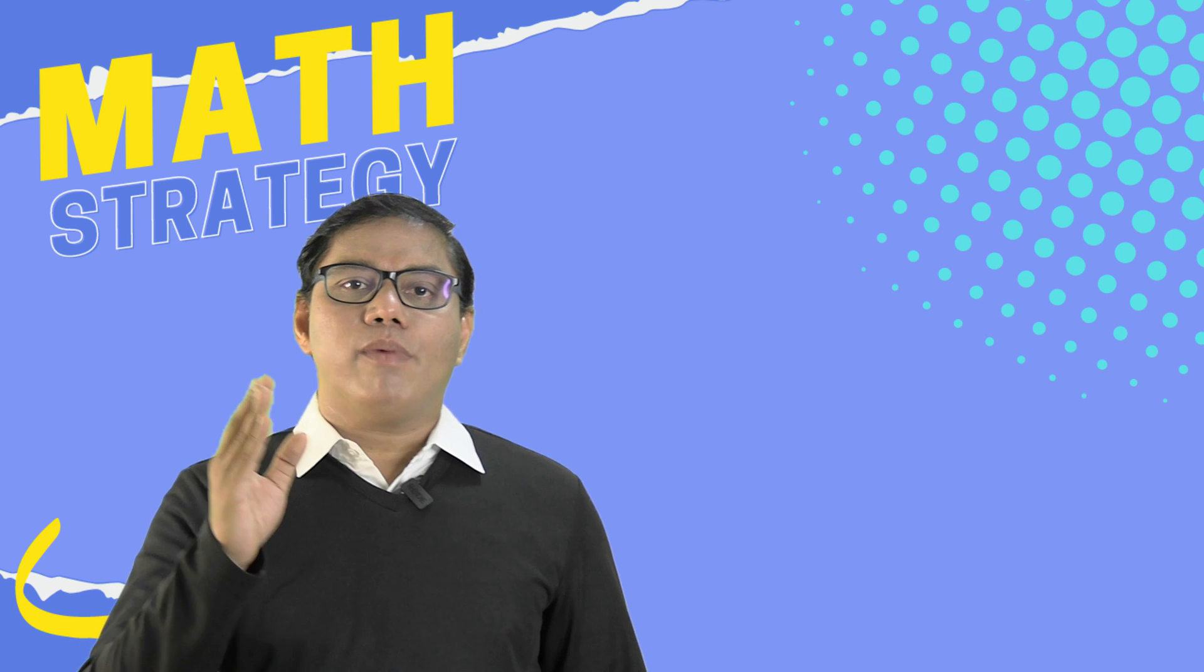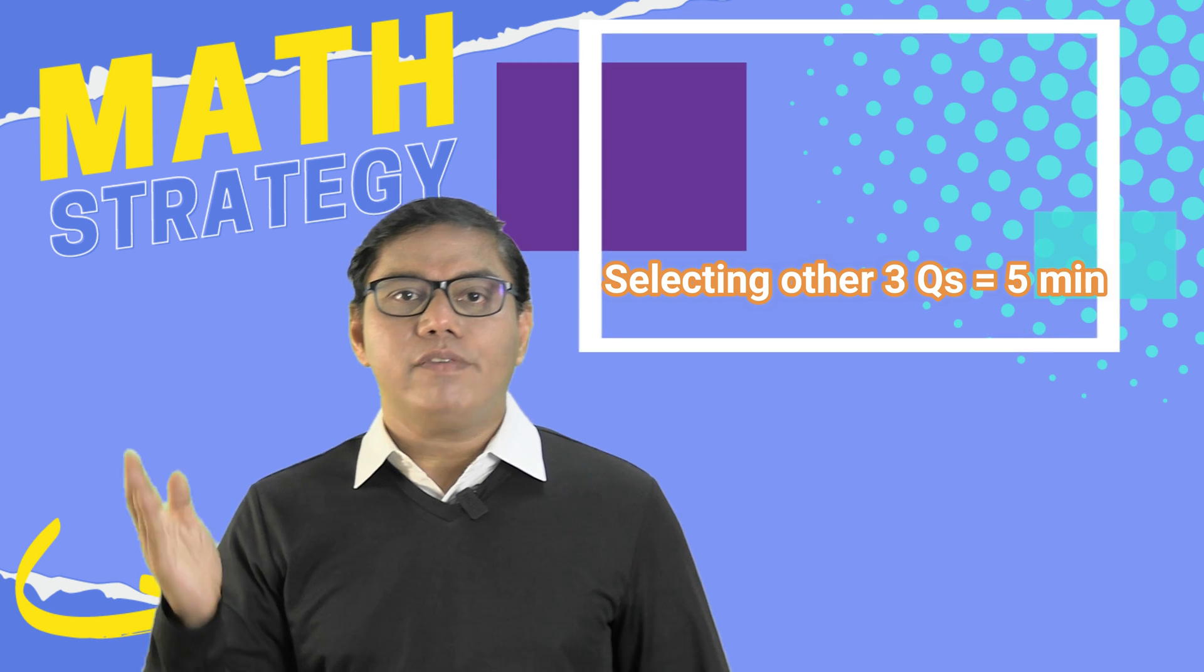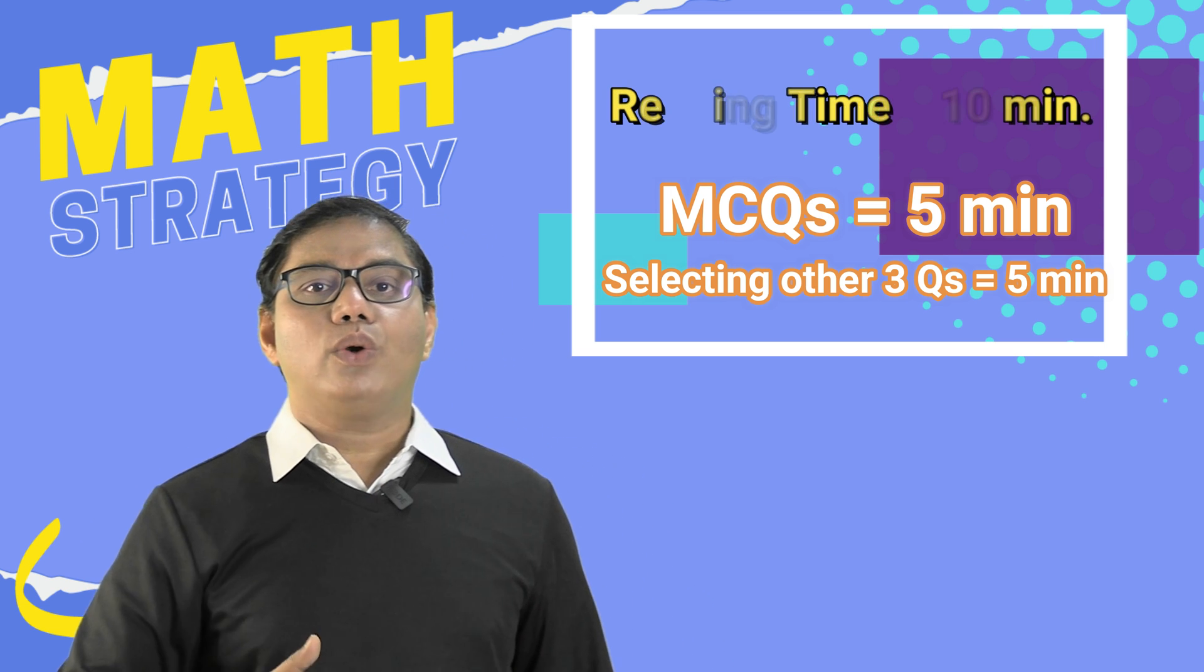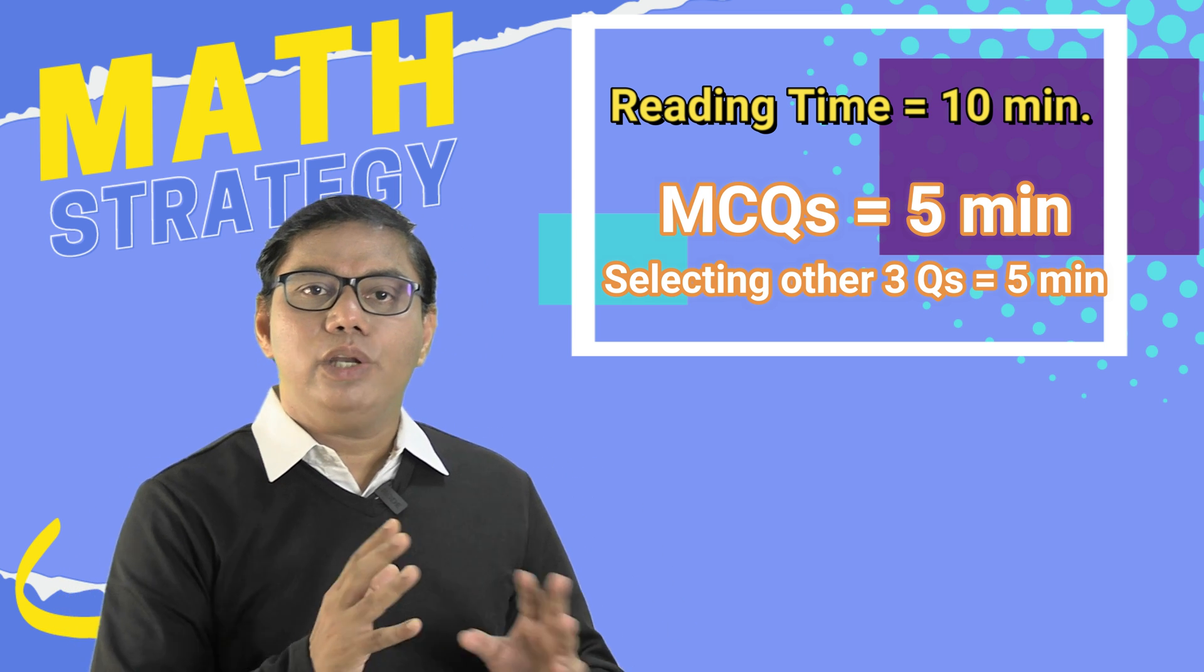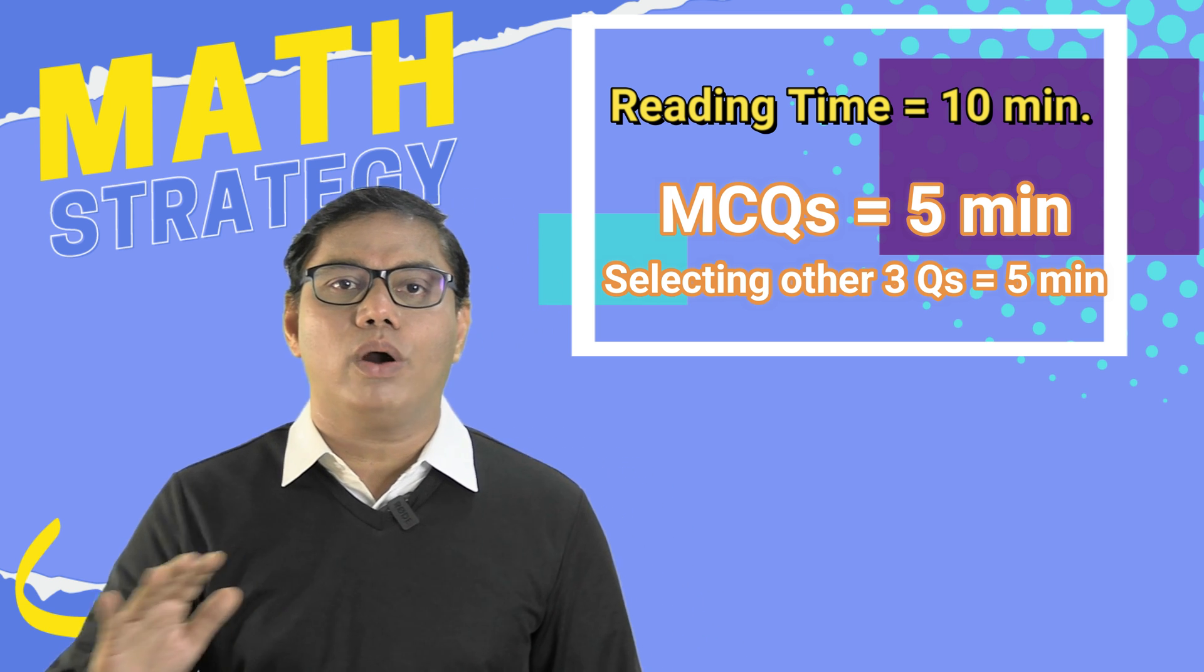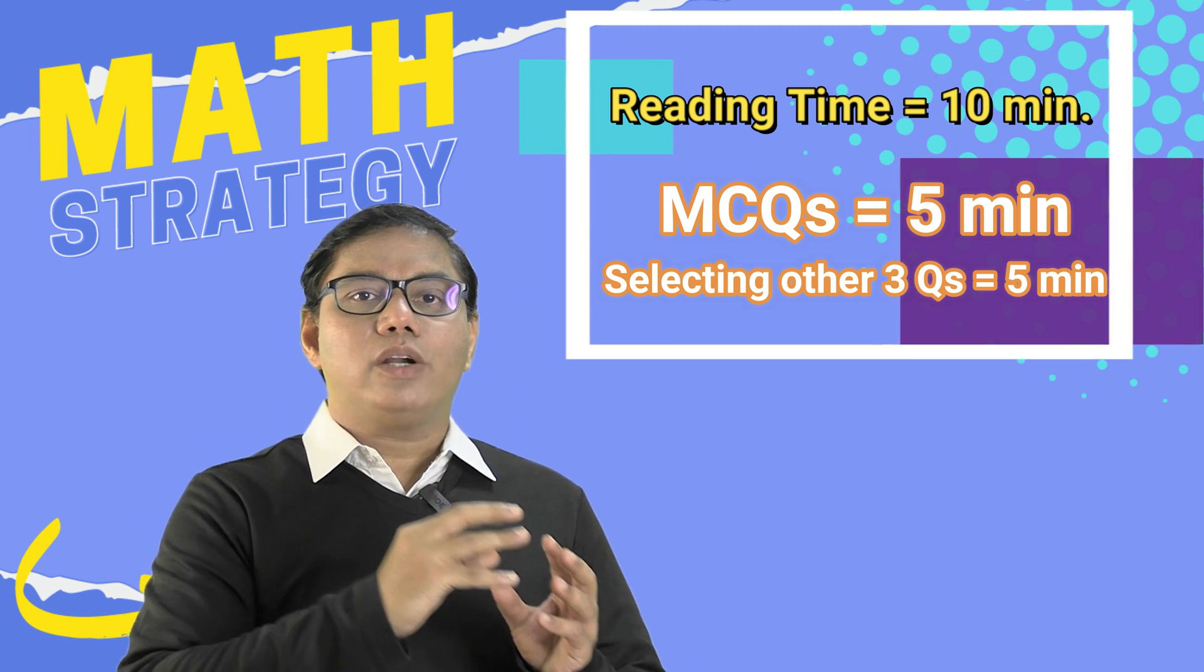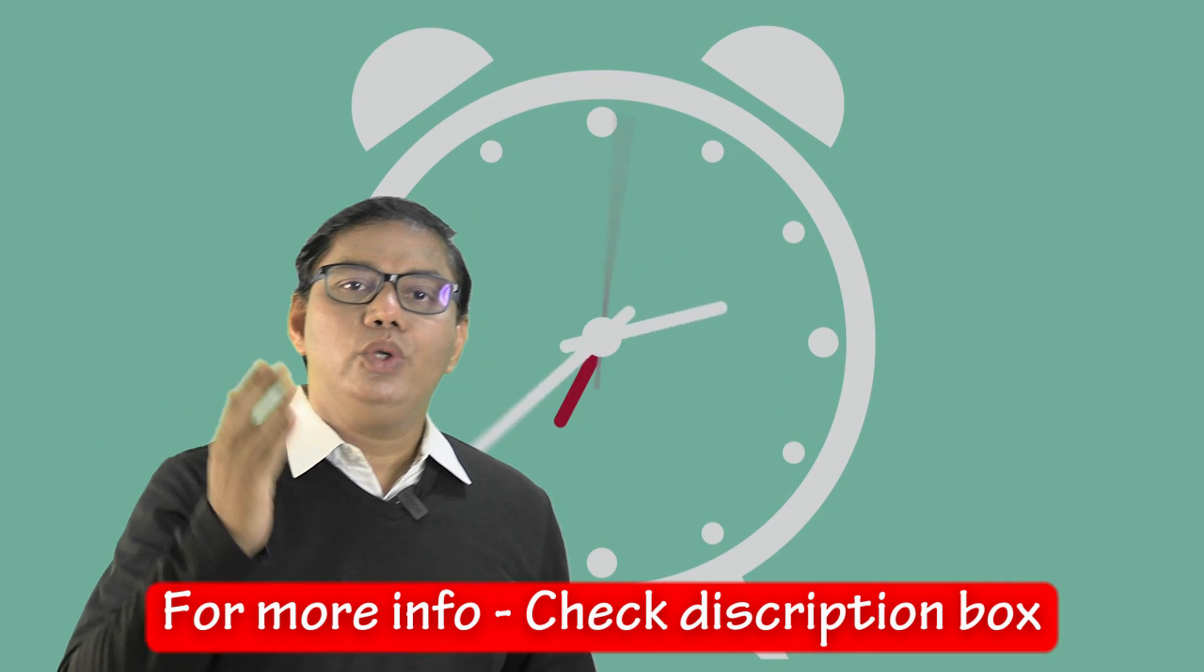You have a reading time of 10 minutes. Use that reading time properly. Get the advantage of that reading time. 5 out of 10 minutes you can use to select 3 questions which you are going to solve out of the given 5 questions. And other 5 minutes keep reserved for MCQs. In your mind you can solve MCQs and you can be ready with your answers. Because for MCQ you have to write only answer. You need not solve the entire sum or the steps. If you use your reading time properly, half of the battle is already won.